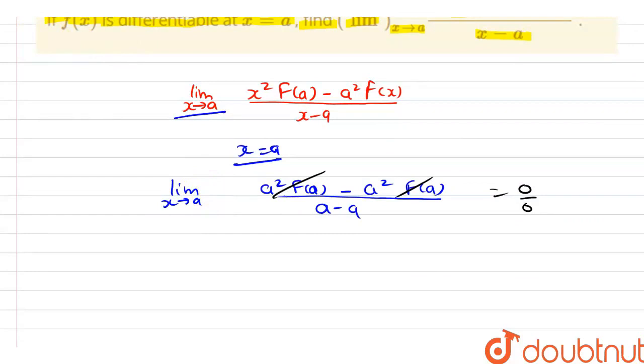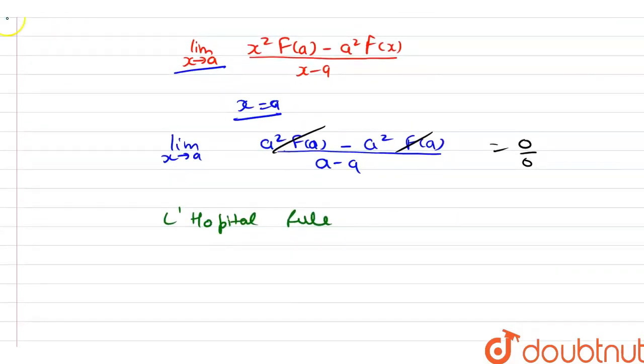So if 0 by 0 form persists, then we have to use L'Hôpital's rule. L'Hôpital's rule says that we have to differentiate numerator and denominator independently.